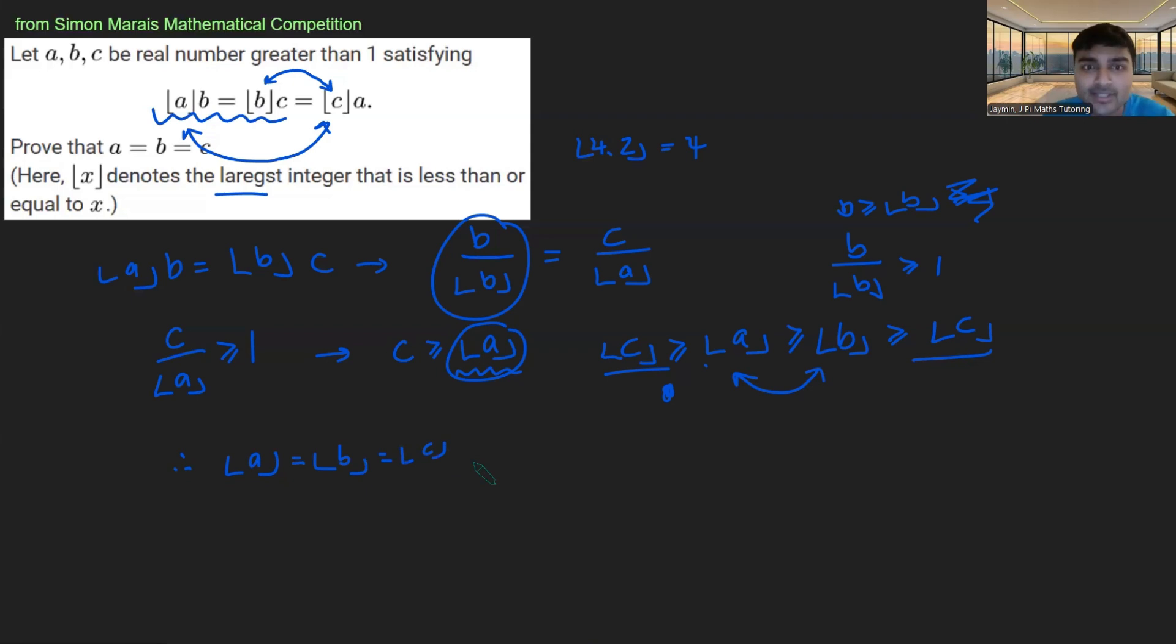That's quite cool. So A, B, and C all have the same floors. Why does that mean that they are all the same? Well, if I just call whatever this is alpha,